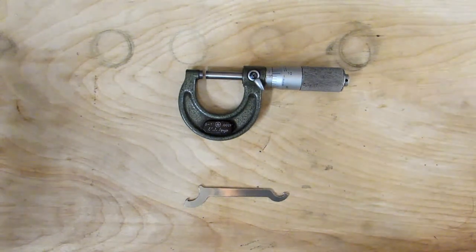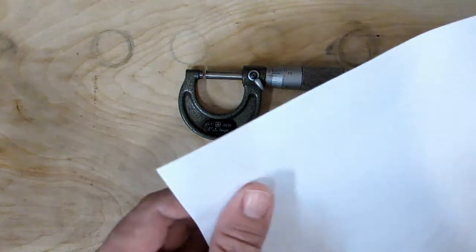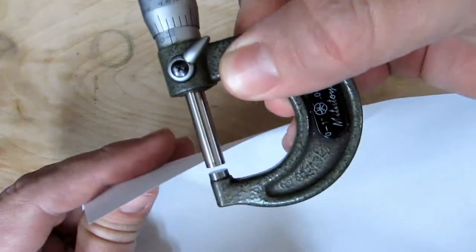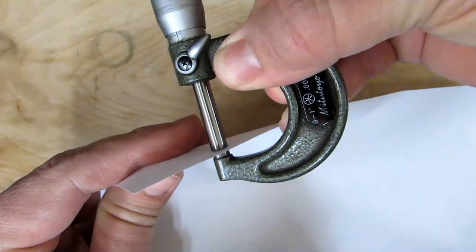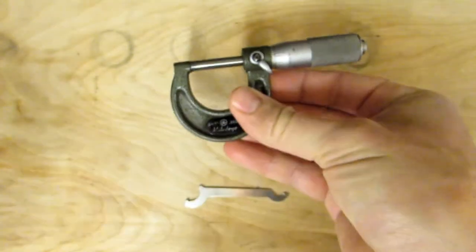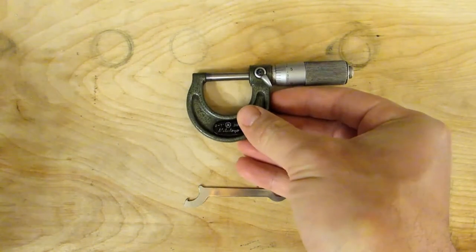the proper way to clean them would be to grab a sheet of office paper like this. Everyone's got that lying around. You just close the micrometer down on the paper, pull the paper out, and that's going to remove any chips that are in there and absorb any oil.